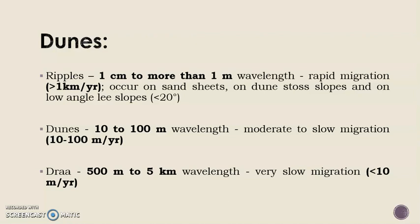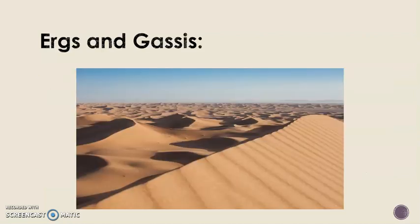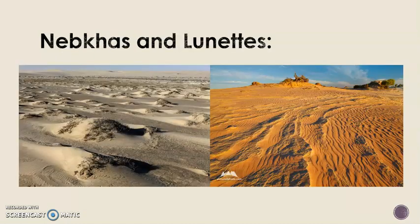Dunes come in diversified shapes, dictated mainly by the amount of sand in the area and the pattern of the winds. As a side note, a chain of dunes is called ergs and the depressions between them are called gases. Dunes formed due to obstacles of shrubs or bushes are called nebkas, and dunes developed on the lee side of a desert depression are called lunates.